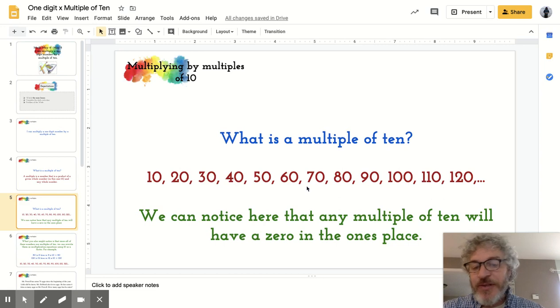So here's some examples of multiples of 10: 10, 20, 30, 40, 50, 60, 70, 80, 90, 100, 110, 120. And I know you can keep jumping up on that pattern of plus 10.